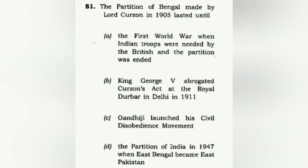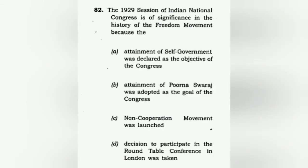The partition of Bengal made by Lord Curzon in 1905 lasted until when? If you've read history, this is a very straightforward answer. The correct answer is B: it was annulled when the King abrogated the Curzon Act at the Royal Darbar in Delhi.